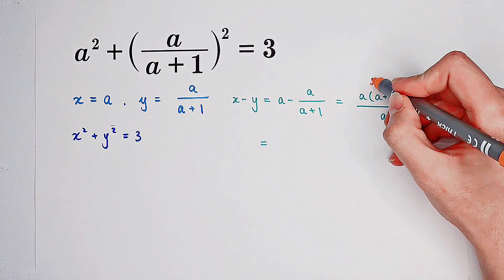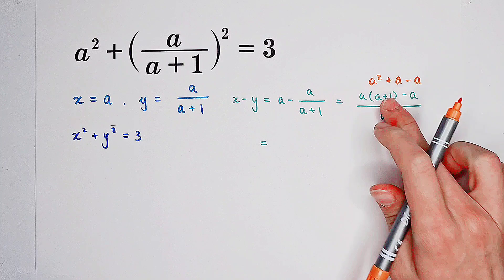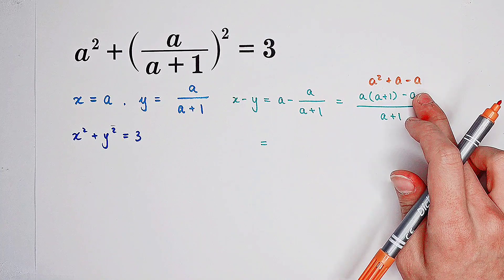And this one is a times a plus 1 then minus a all over a plus 1. On the numerator,